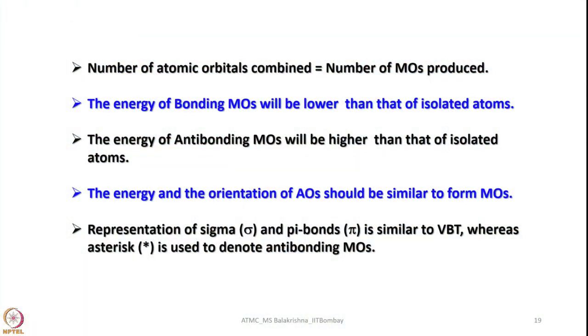The number of atomic orbitals combined is equal to the number of molecular orbitals produced. The energy of bonding molecular orbitals will be lower than that of the isolated atoms. The energy of antibonding molecular orbitals will be higher than that of the isolated atom, and they are close in energy to the atomic orbital which is higher in energy compared to the other one, in the case of two atoms having different relative energies. The energy and orientation of atomic orbitals should be similar to form molecular orbitals.